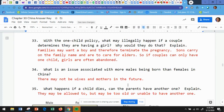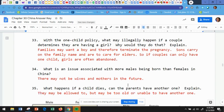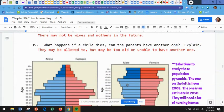So number 34, what is an issue associated with more males being born than females in China? Well, if you have all kinds of males, but not a lot of females in the future, there aren't going to be enough wives and mothers. And so it's very difficult to be able to have a child boy or a girl if you don't have enough women at all. Number 35, what happens if a child dies? Can the parents have another one? Explain. Well, oftentimes they are allowed to, but if the child is already like 15 years old, the parents may be too old or unable to have another child. And so that may not be a possibility for them to do. So they may be allowed to, but they may be unable to.